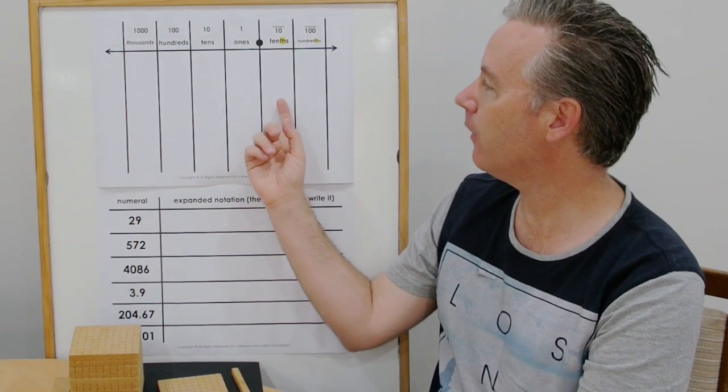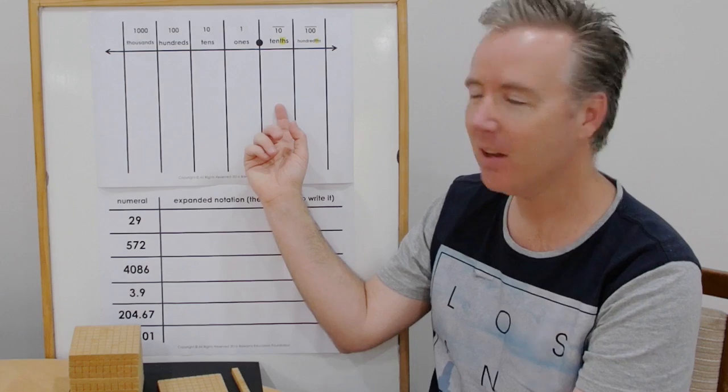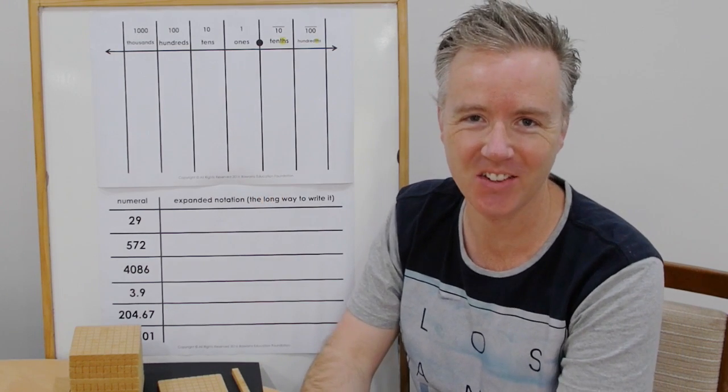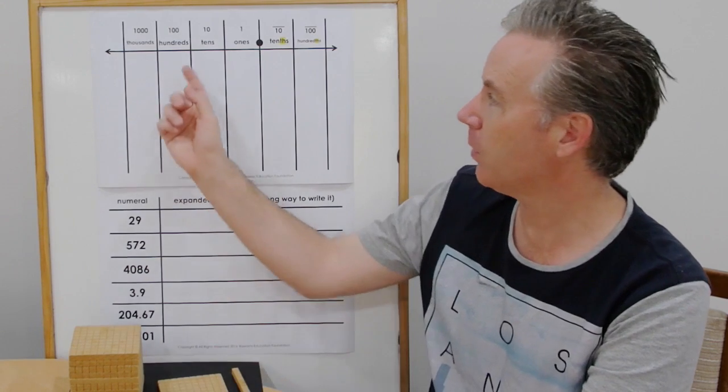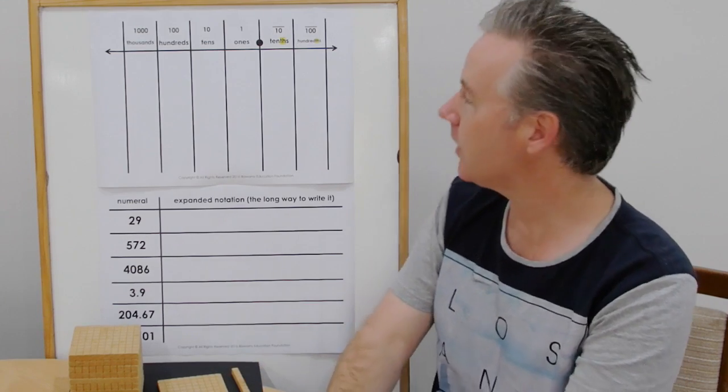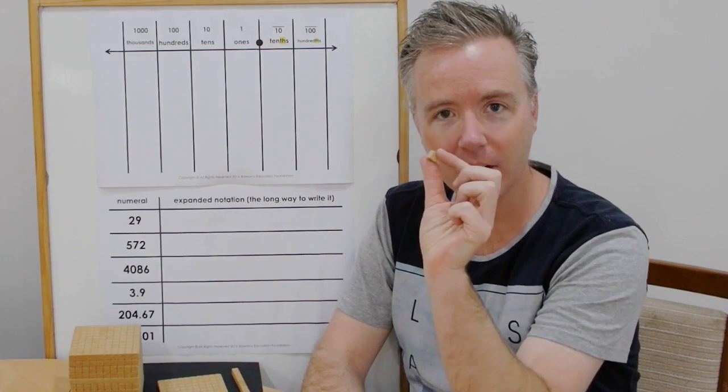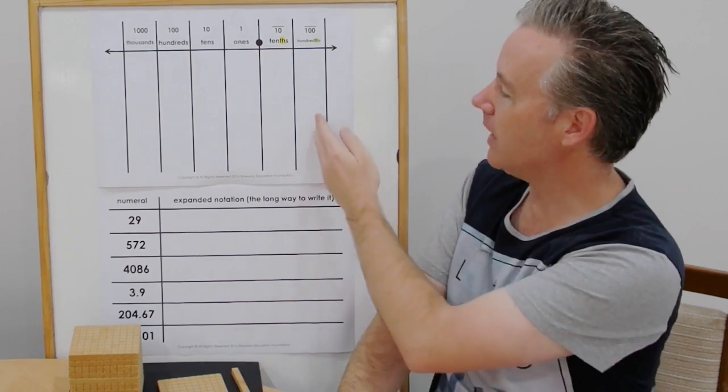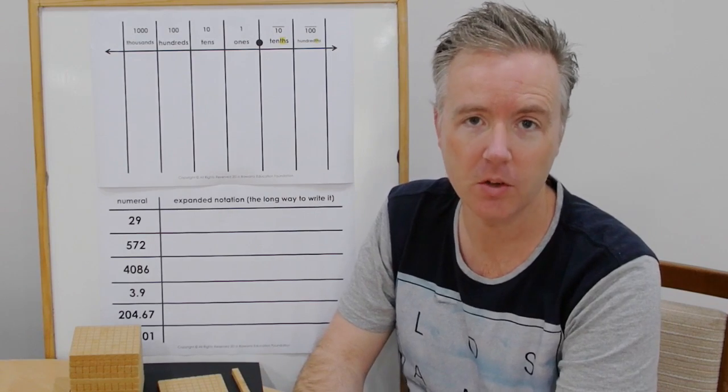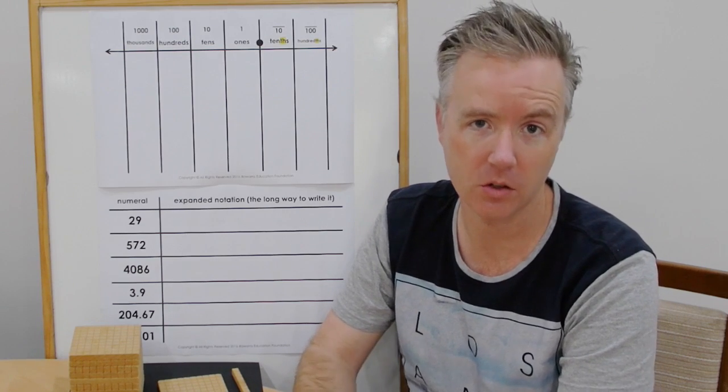So we have the first column to the right of the decimal place is our tenths column. You'll notice I've highlighted the th at the end of tenths in yellow. It's critical that we don't get lazy with our language, otherwise we may confuse it with the tens column. So it's tenths represented over ten. So it is of course this one divided into ten equal parts. So it's quite small. The next column we have is our hundredths column, which is one divided into one hundred equal parts, represented there as a fraction over one hundred with the denominator as one hundred.